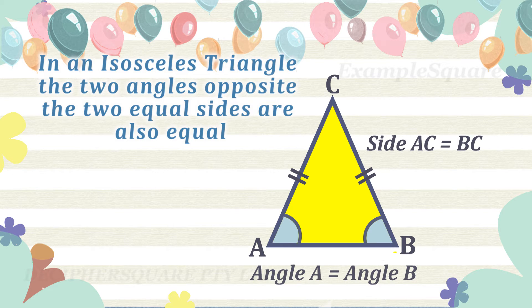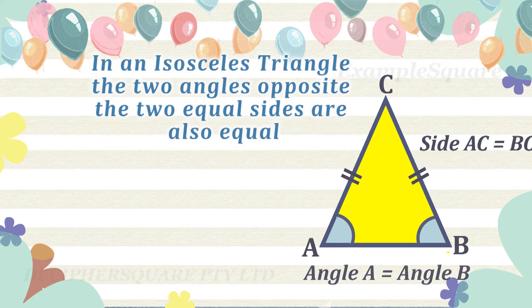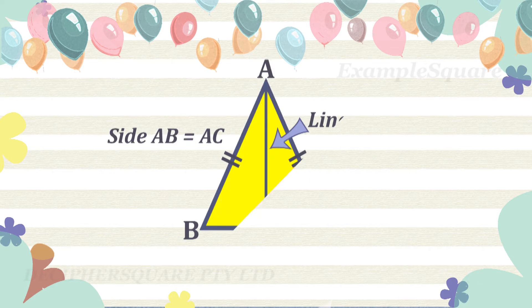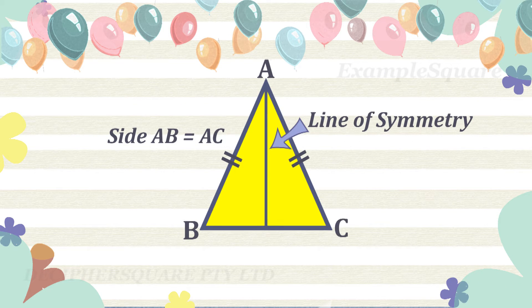In the isosceles triangle shown here, angles A and B are equal angles. An isosceles triangle has one line of symmetry.